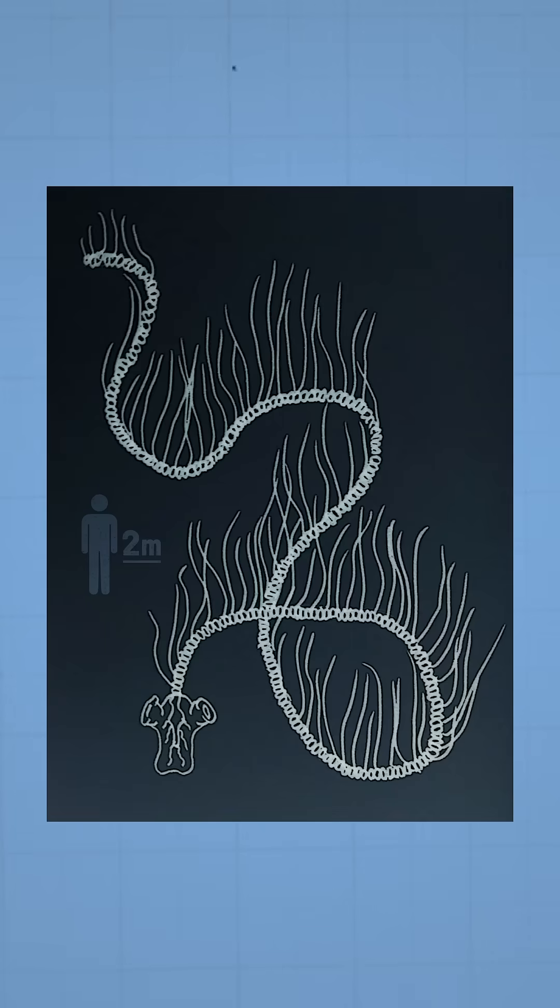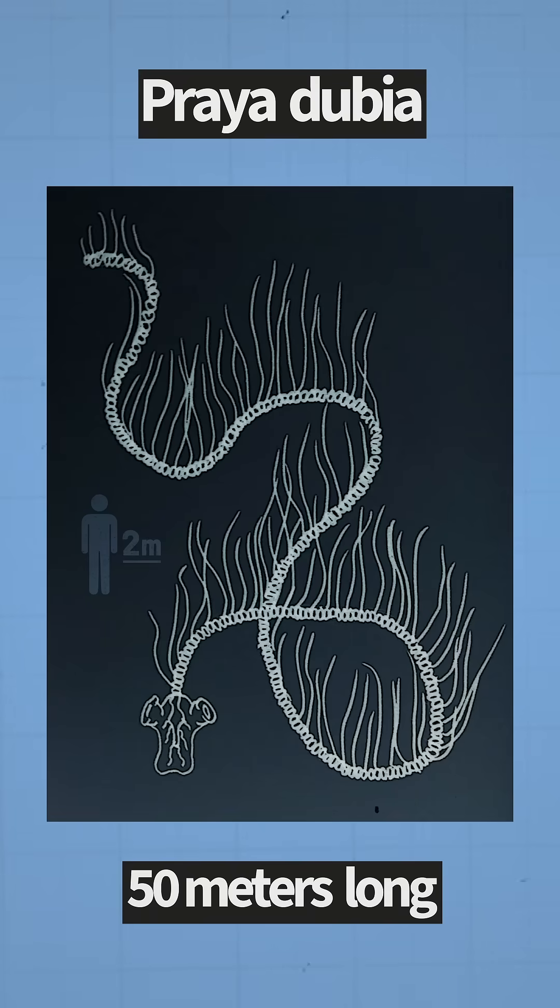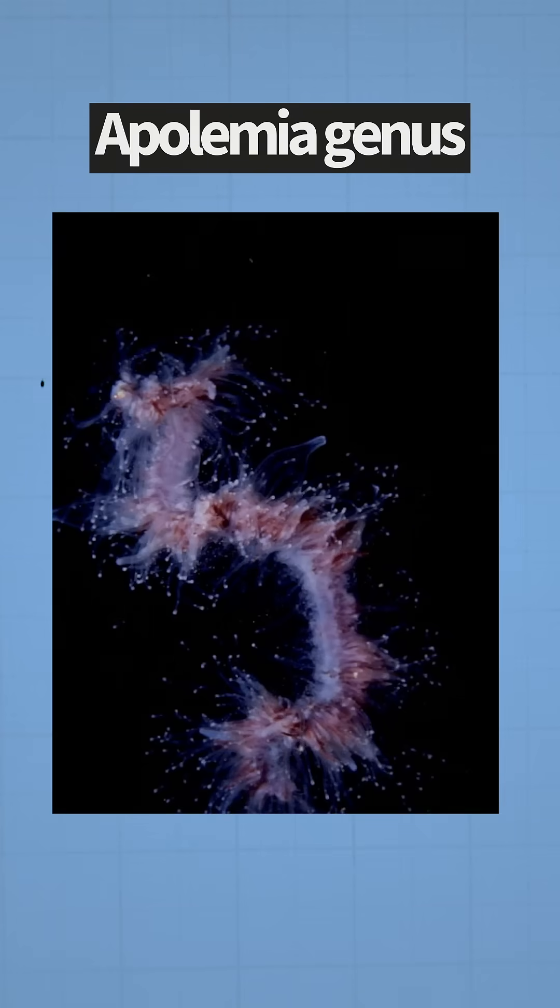A giant species, Praia dubia, reaches up to 50 meters in length while remaining as thin as a broomstick. The largest individual of the Apolemia genus was estimated to be 119 meters long.